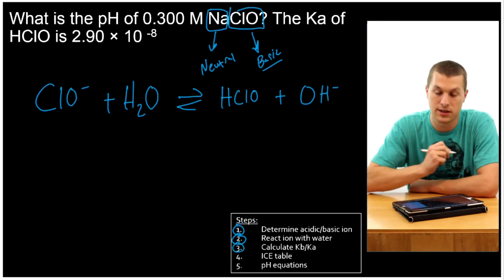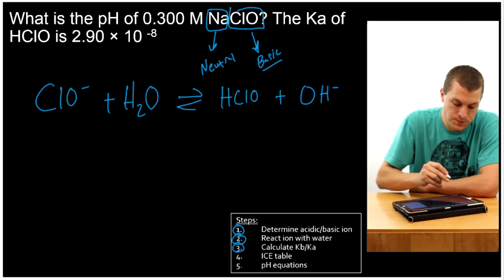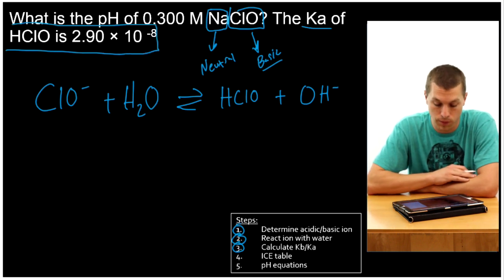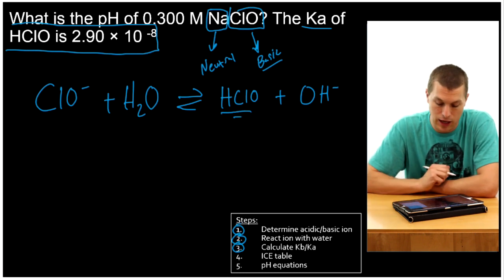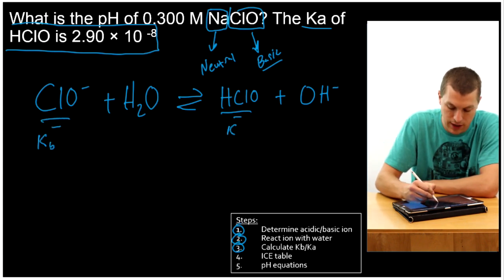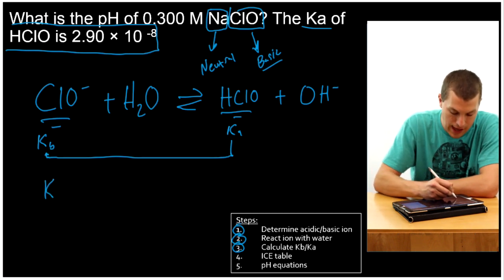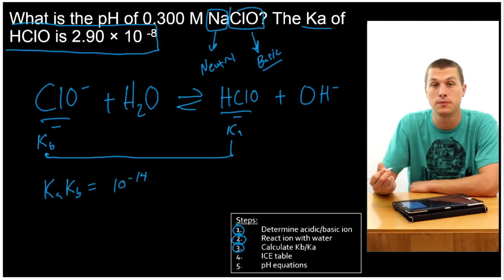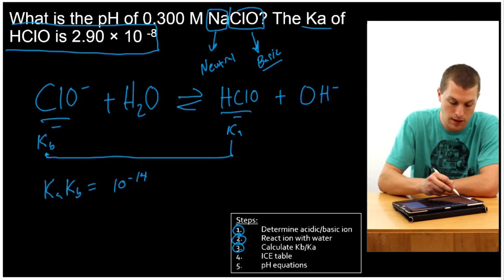Now comes step three, where we calculate the equilibrium constant. This is a little funny, because you don't have to do this in a normal weak acid base problem. But notice here, we're given the Ka of HClO. That's this compound right here. Well, if we're given the Ka of that compound, it turns out we can actually go back to the Kb of this compound. So we're given Ka, and we want to go backwards to Kb. How do we do that? If we remember that Ka times Kb equals 10 to the minus 14, we can see it's a pretty easy problem to solve.